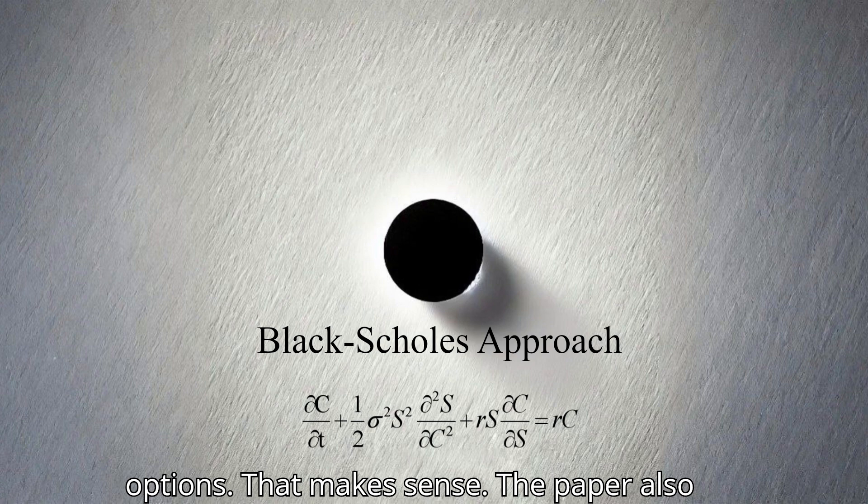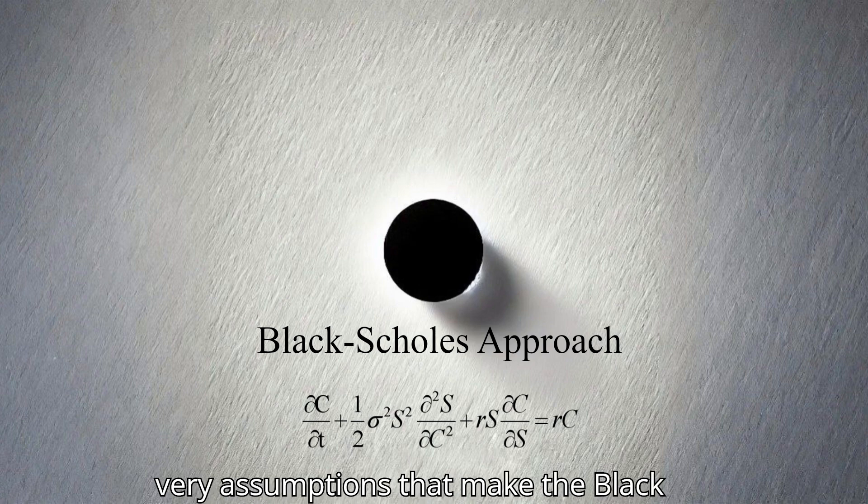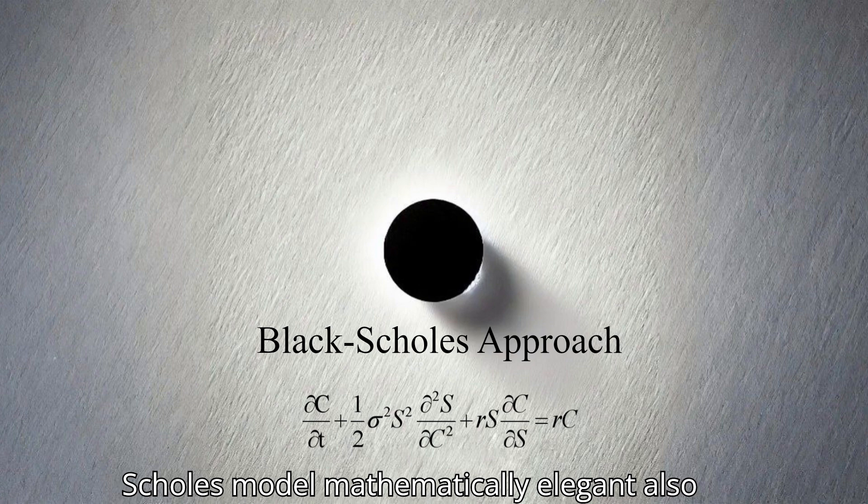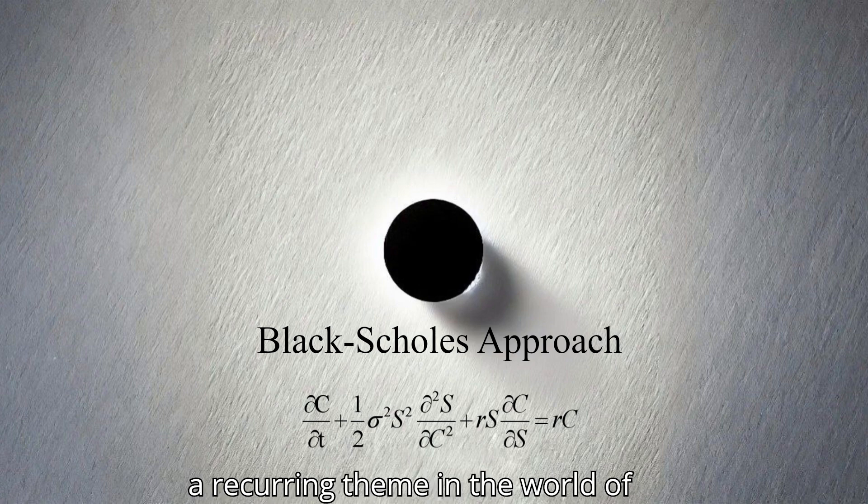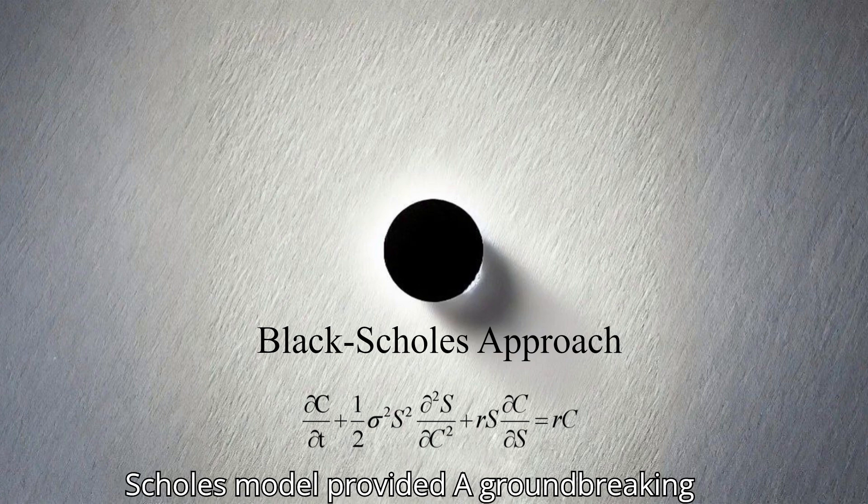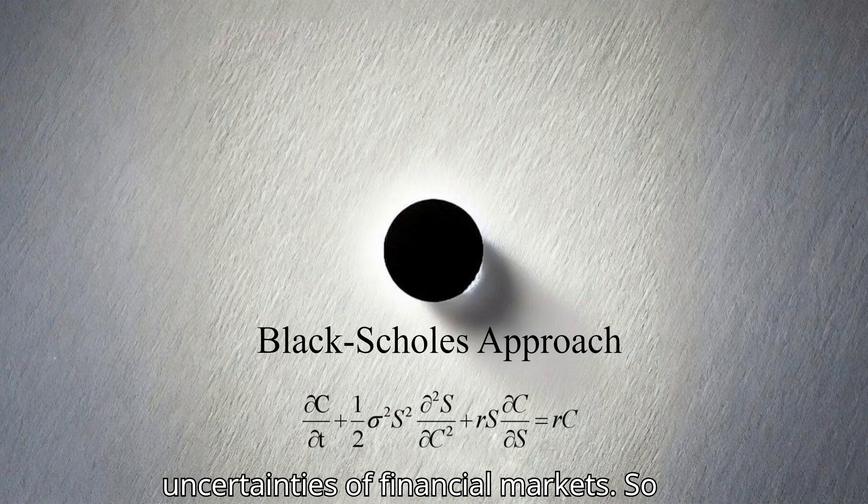The paper also highlighted the fact that the model tends to perform better in stable market conditions and struggles when volatility spikes or unexpected events occur. It seems like the various assumptions that make the Black-Scholes model mathematically elegant also limit its ability to accurately reflect the turbulent nature of real-world financial markets. Precisely. This inherent tension between theoretical simplicity and practical applicability is a recurring theme in the world of financial modeling. While the Black-Scholes model provided a groundbreaking framework, it also sparked a continuous quest for more robust and sophisticated models that can better handle the inherent complexities and uncertainties of financial markets.